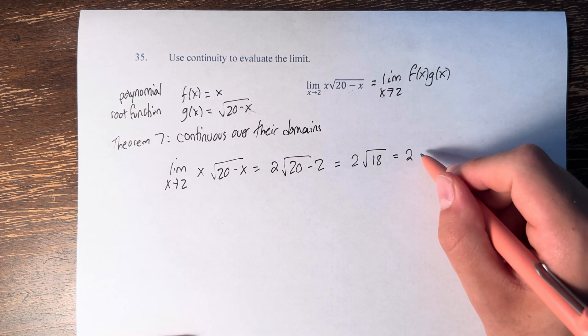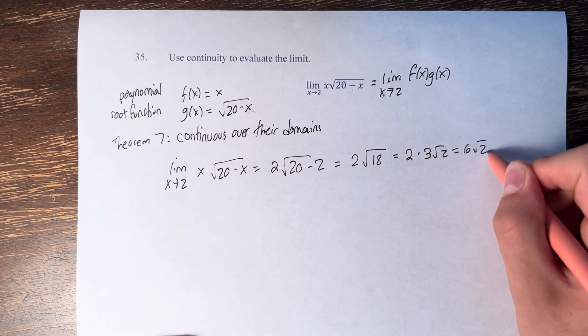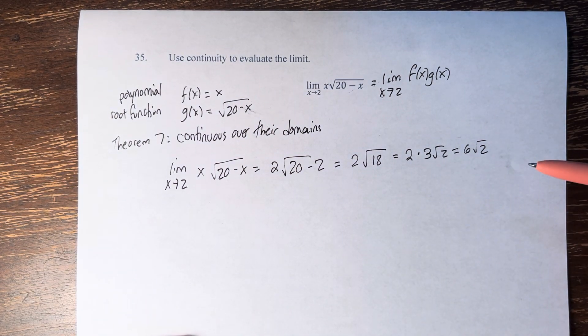2 times the square root of 18 is 3 root 2, so 6 root 2. Therefore, the value of the limit is 6 root 2.